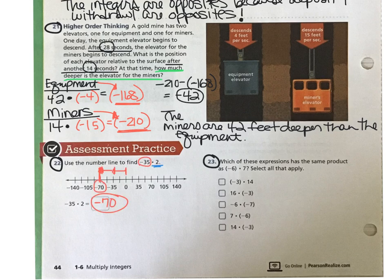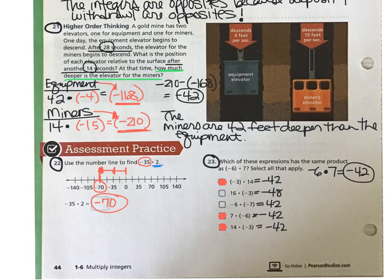Again, remember with number 22, you're looking more at the model of the number line. So you're showing two groups of negative 35 and that lands you at negative 70. And last but not least, go ahead and check your answers to number 23. When you're finished with this lesson, you should be able to go on and do some work that goes with it. If you have questions, come see me.